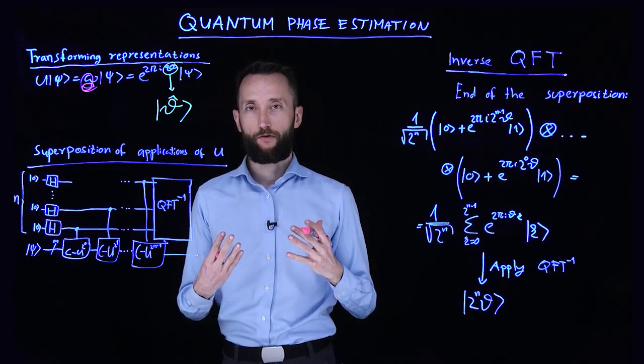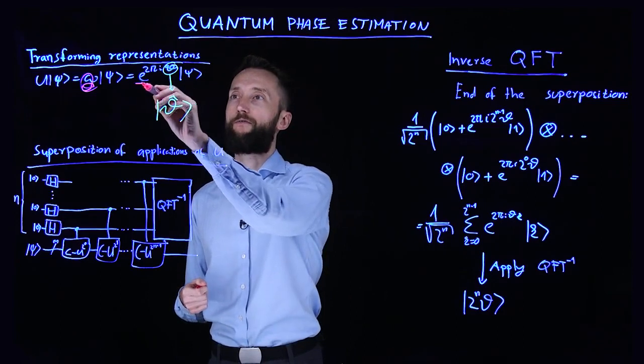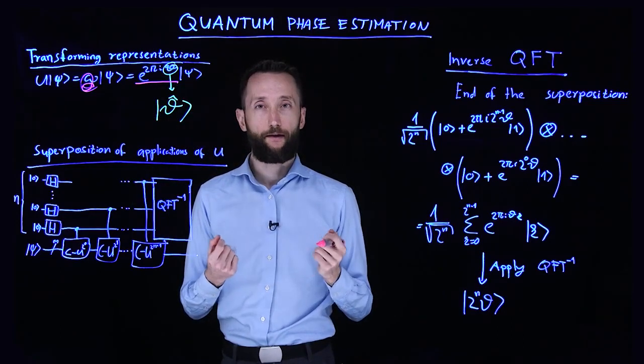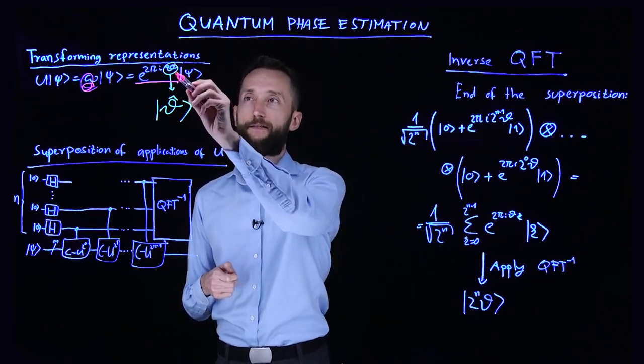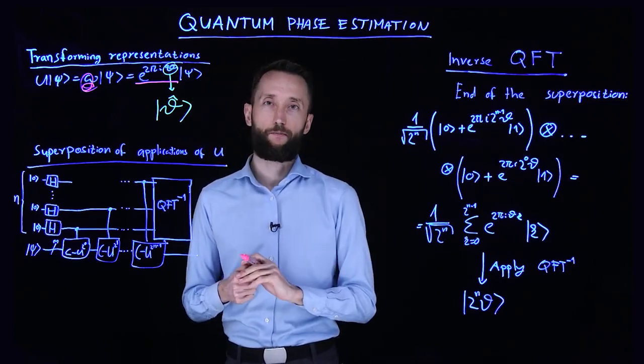In other words, we can write the eigenvalue as e^(2πiθ), where θ represents an angle around the complex unit circle. This theta phase is what we are going to estimate to some finite precision.